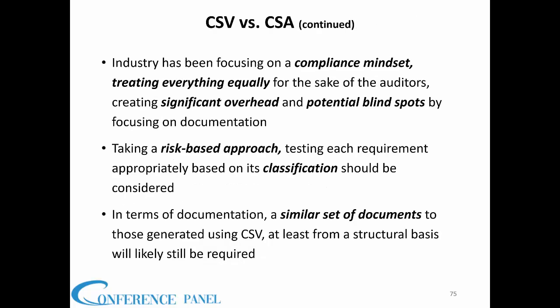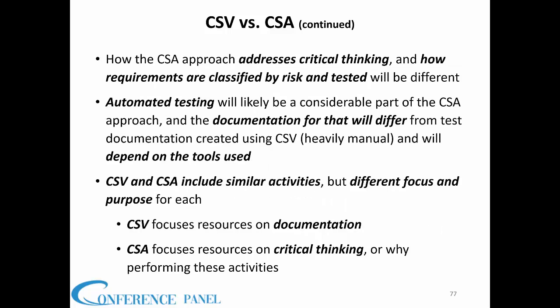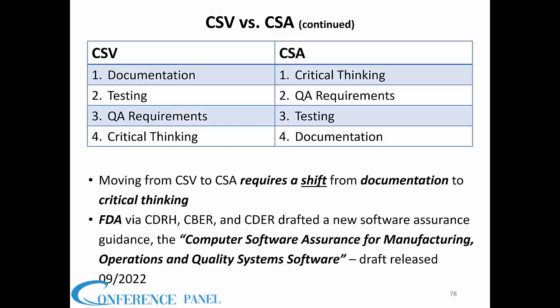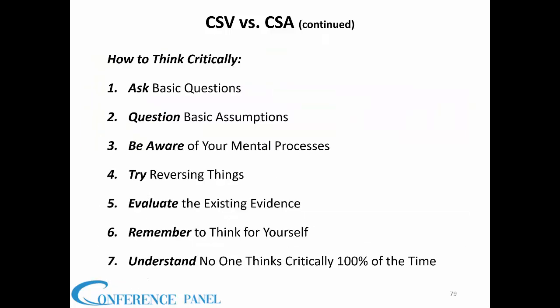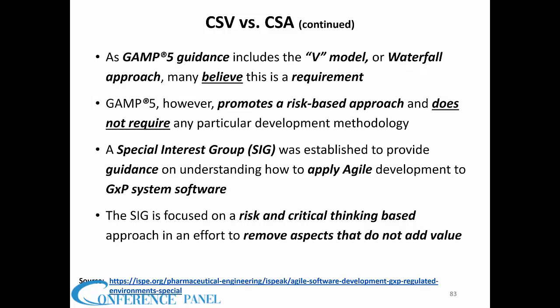Industry focused on a compliance mindset, treating every requirement equally and testing each to the same degree. Modernization of life science industries saw FDA improving its own infrastructure and efficiency. CSA also focuses on critical thinking — requirements are classified by risk and tested differently accordingly. Moving to CSA requires a shift from documentation-heavy processes to critical thinking: asking basic questions and questioning assumptions rather than taking anything at face value.